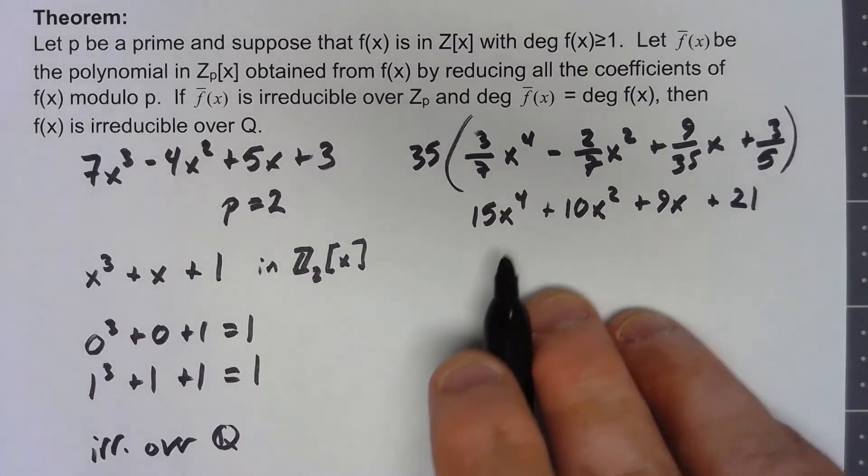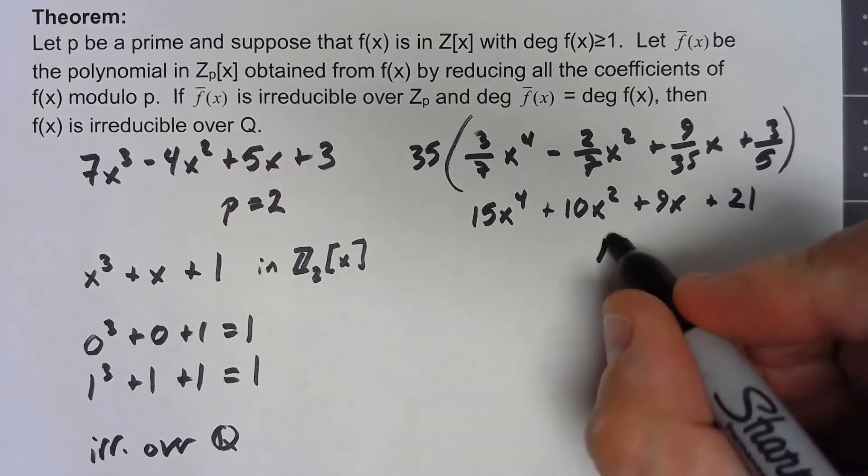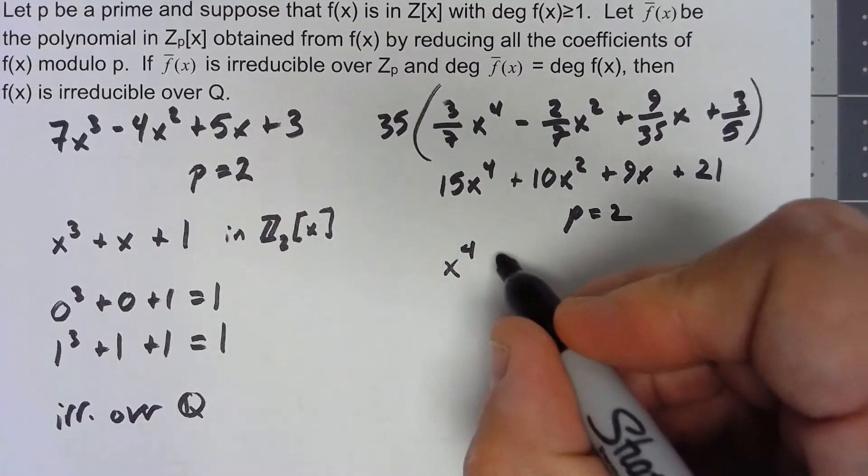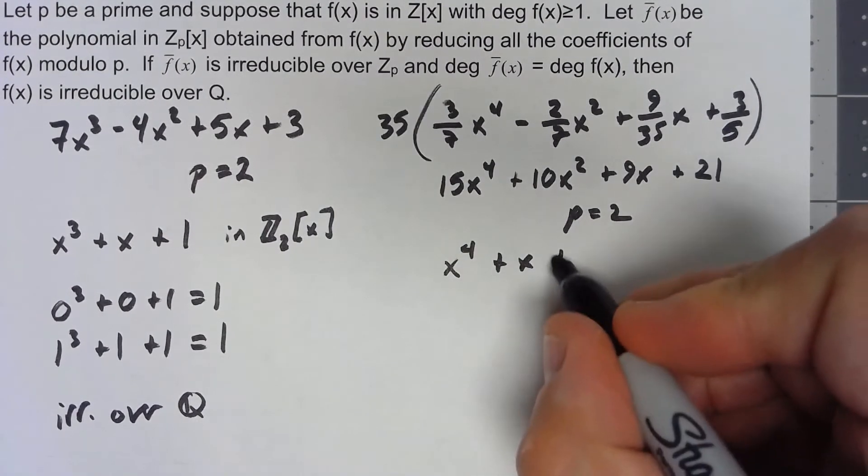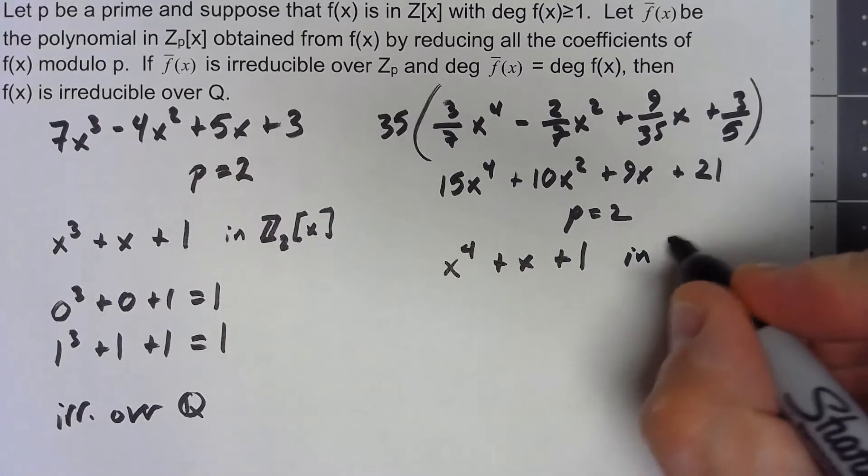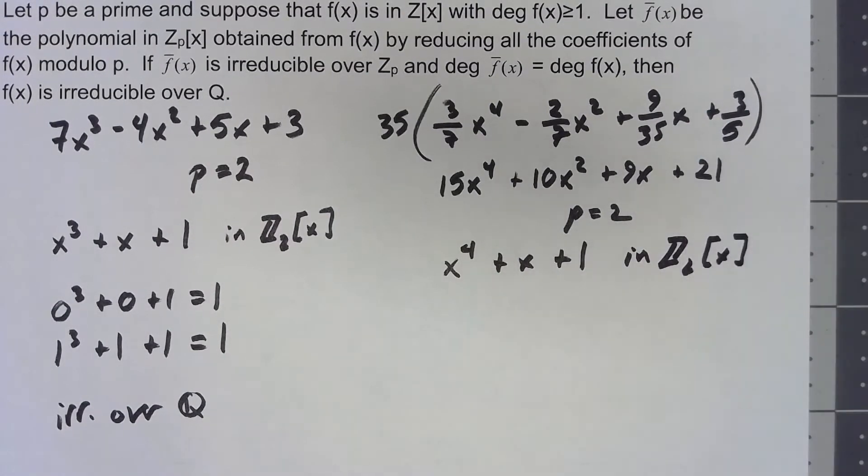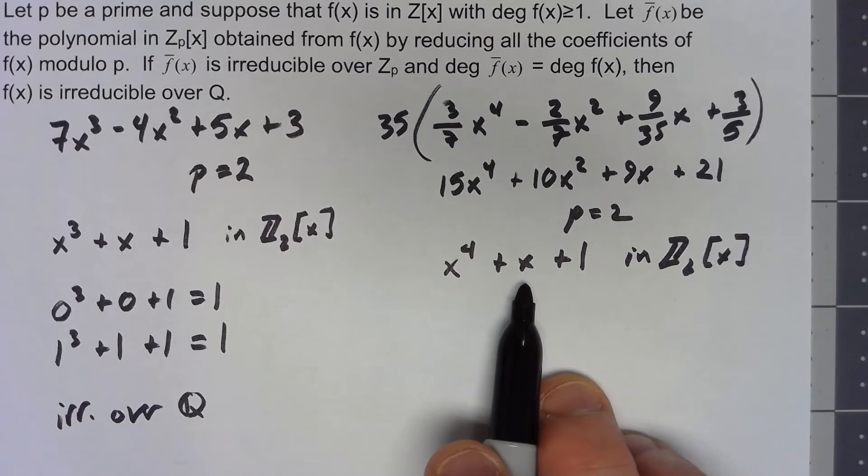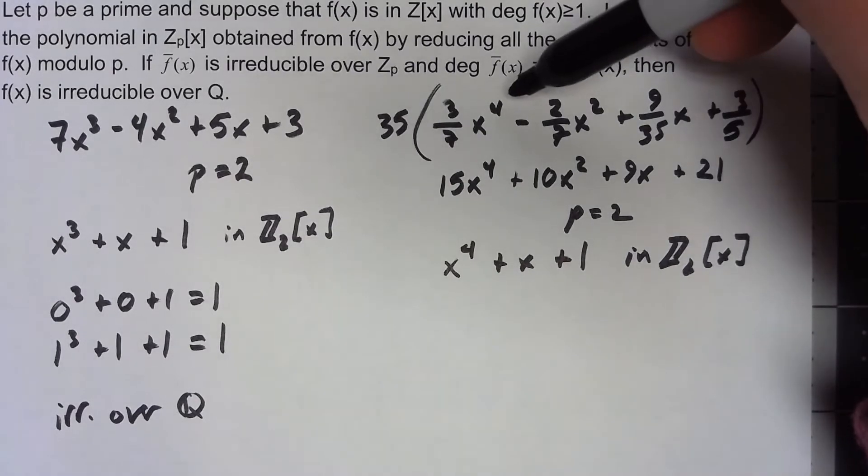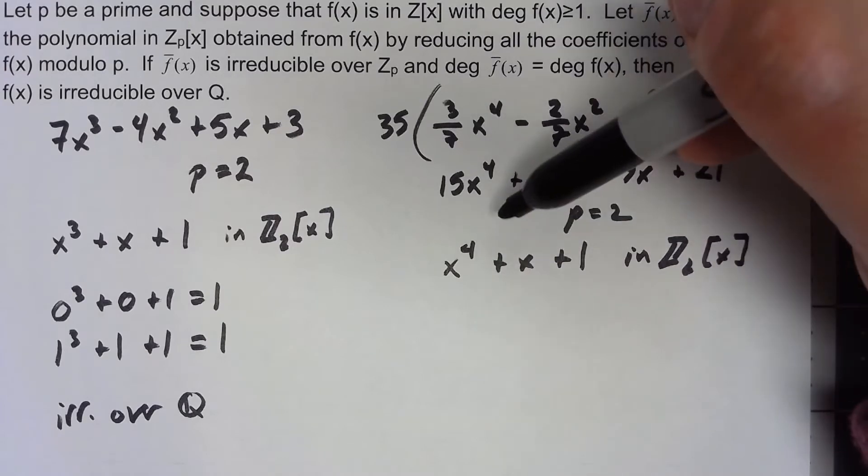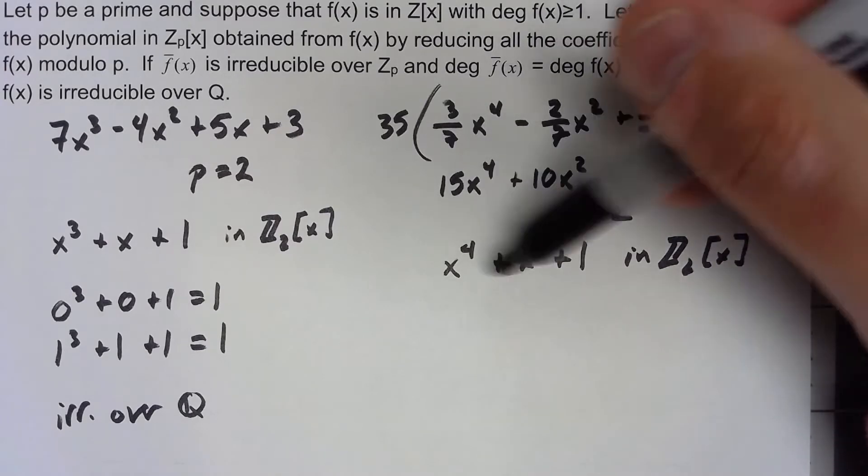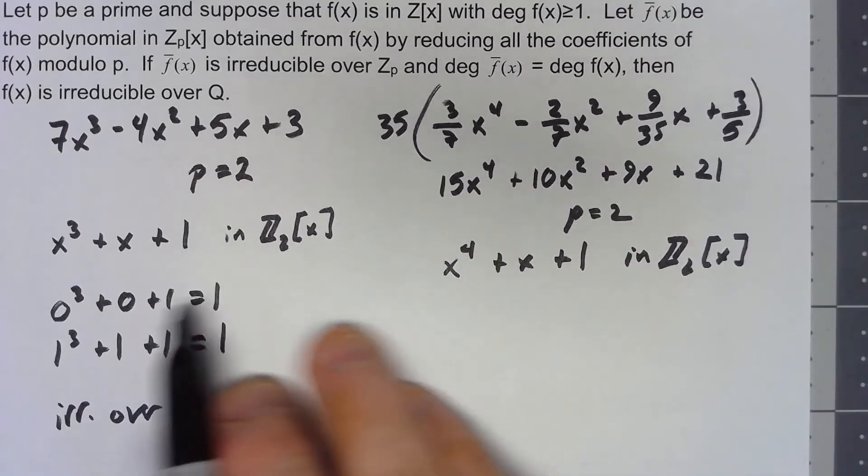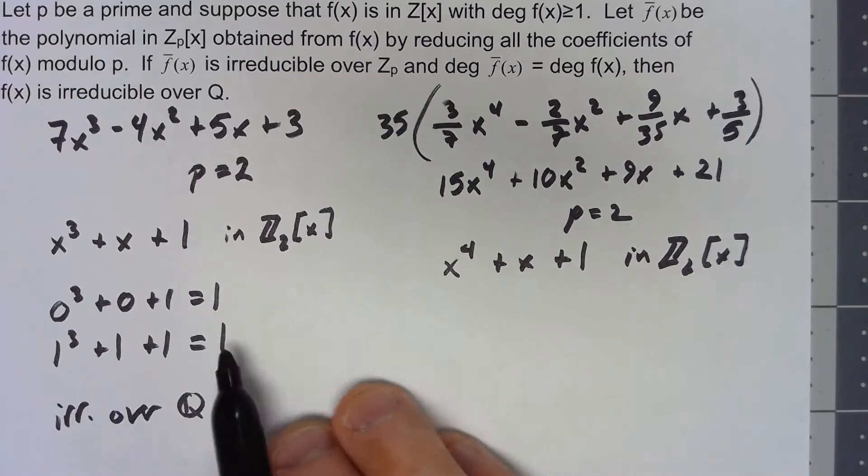I'll do the same kind of thing. If I reduce that using p equals 2, we get x⁴ + x + 1. Unfortunately here, this isn't a cubic. Well, to some extent it's fortunate because the degree here has to match to use this theorem. But because it's a quartic, we can't just say that if it doesn't have a zero then it's irreducible.